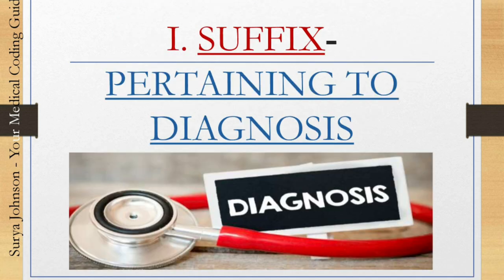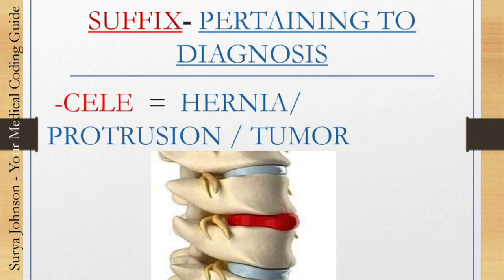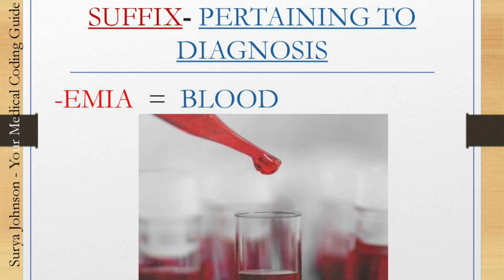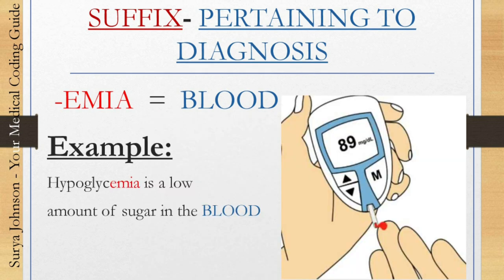The first category is suffixes pertaining to diagnosis — that is, a condition or the diagnosis of the patient. The first suffix is '-cele' (C-E-L-E), which means hernia, protrusion, or a tumor — something protruding out from its position. For example, gastrocele means protrusion or hernia of the stomach. The next one, '-emia,' means blood.